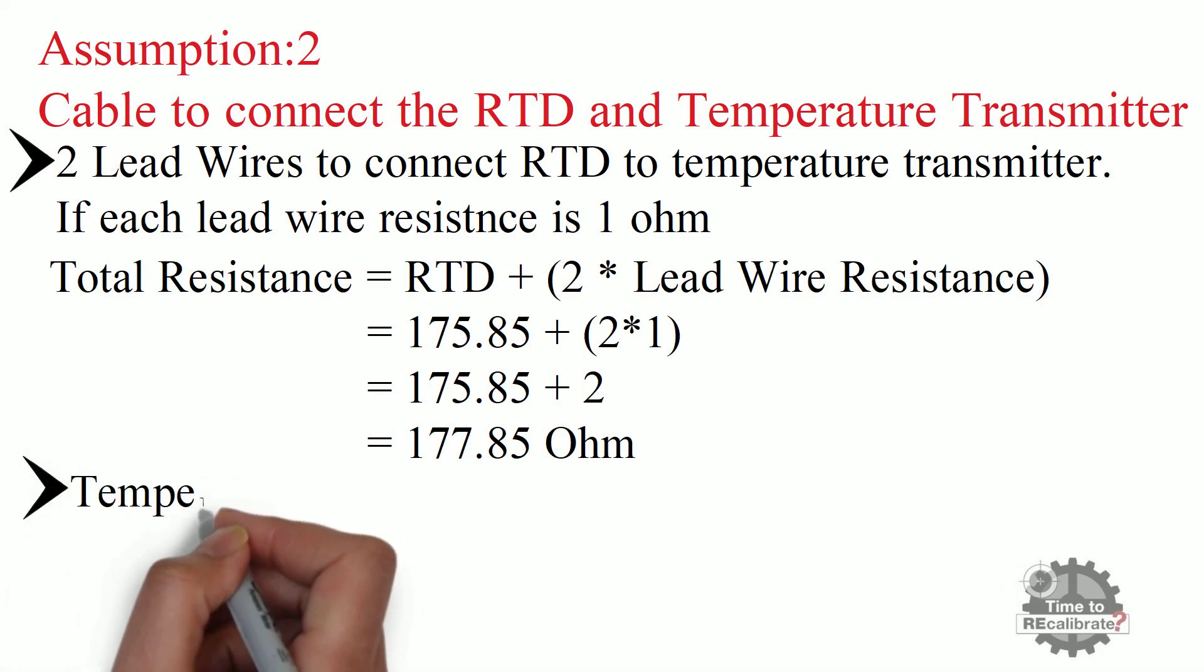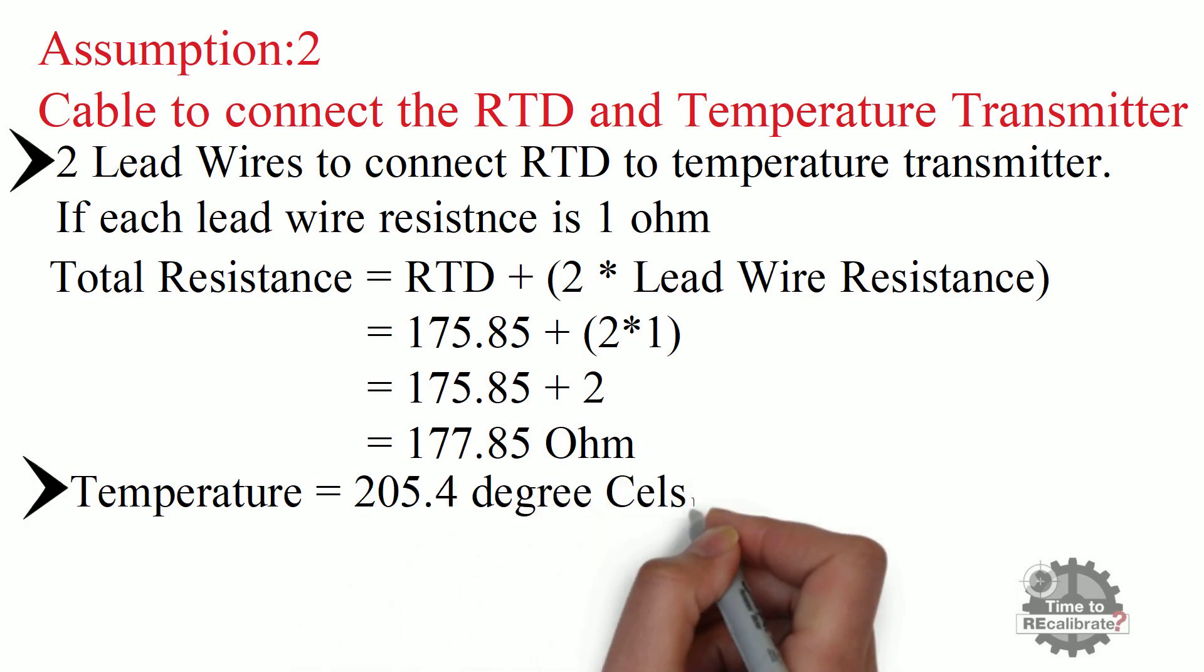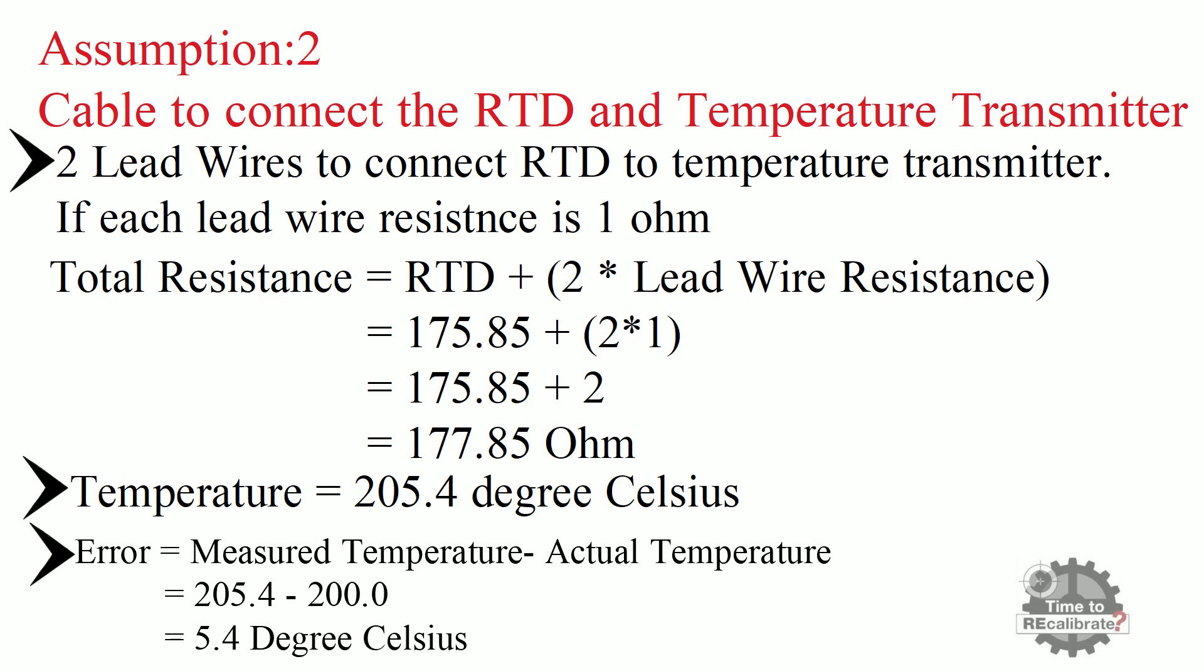In this example, the temperature according to the total resistance value is 205.4 degrees centigrade, which is incorrect temperature. And if we calculate error, we will get 5.4 degrees Celsius error. In other words, the lead resistance introduced measurement error of 5.4 degrees centigrade.